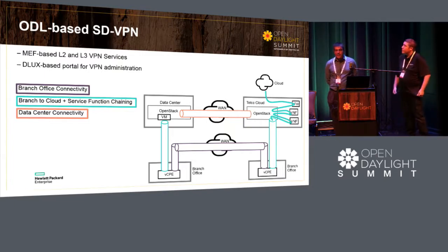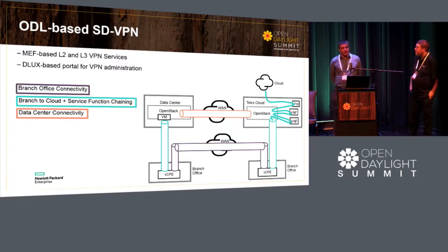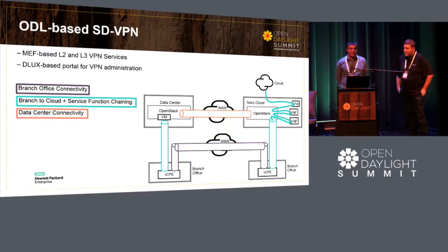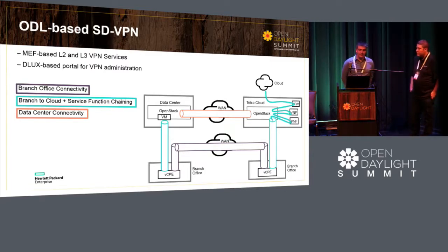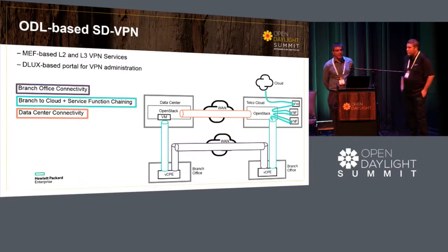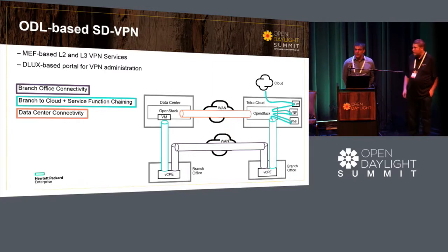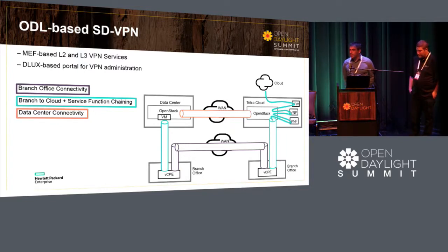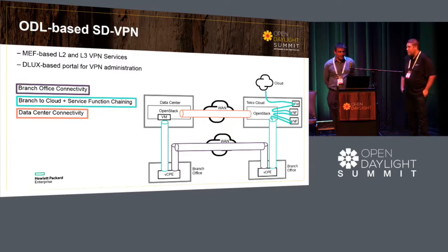We call it an ODL-based SDVPN. It's more like the SD-WAN that you are familiar with, but we see it more as SDVPN. Because SD-WAN started as a better uplink, but we see that as an opportunity to have more than just a better uplink — to have your VPN servicing running on every network in between, and also enabling additional capabilities into private clouds and public clouds.